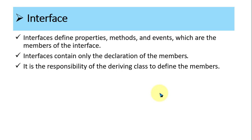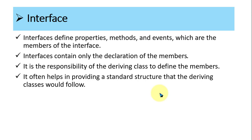Basically, an interface gives you a set of rules which should be implemented by the class. It often helps in providing a standard structure that the deriving class would follow. It is a set of rules given by the interface that have to be followed inside the class.